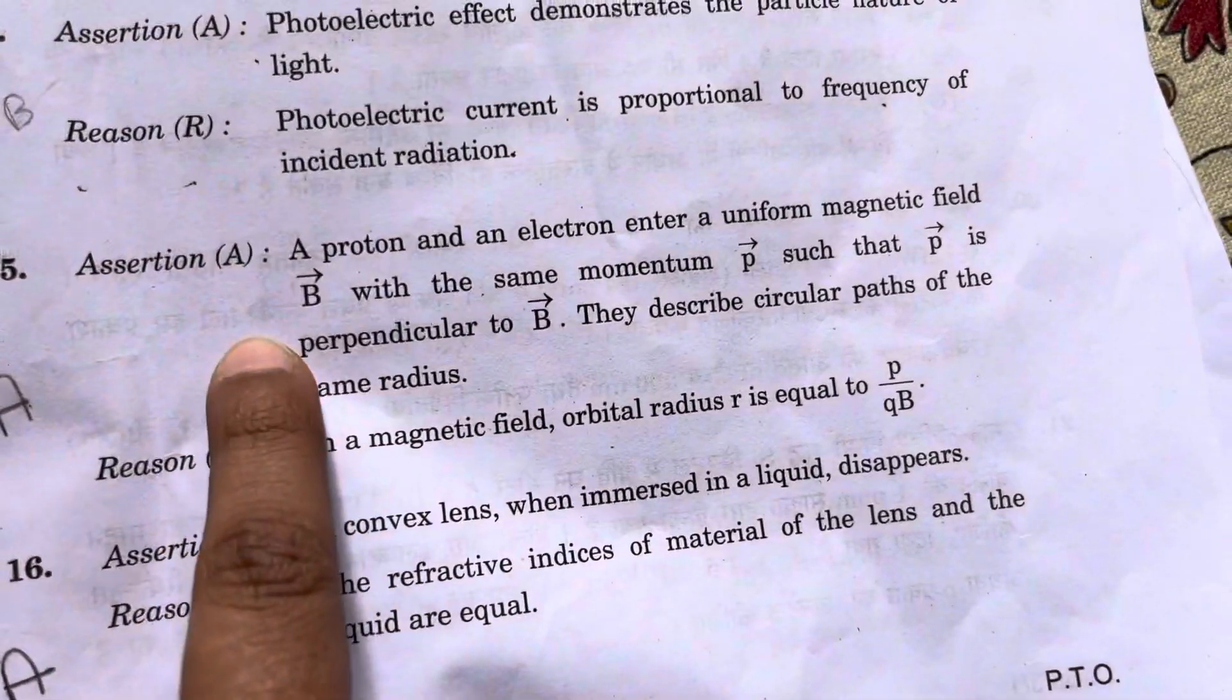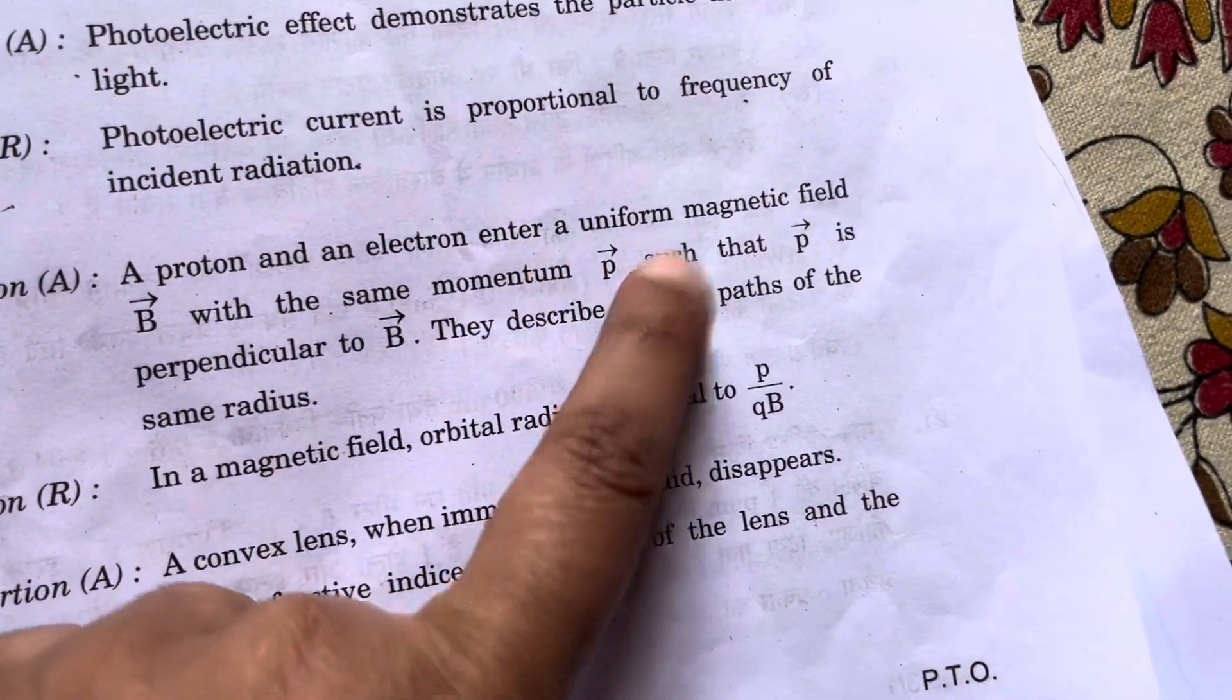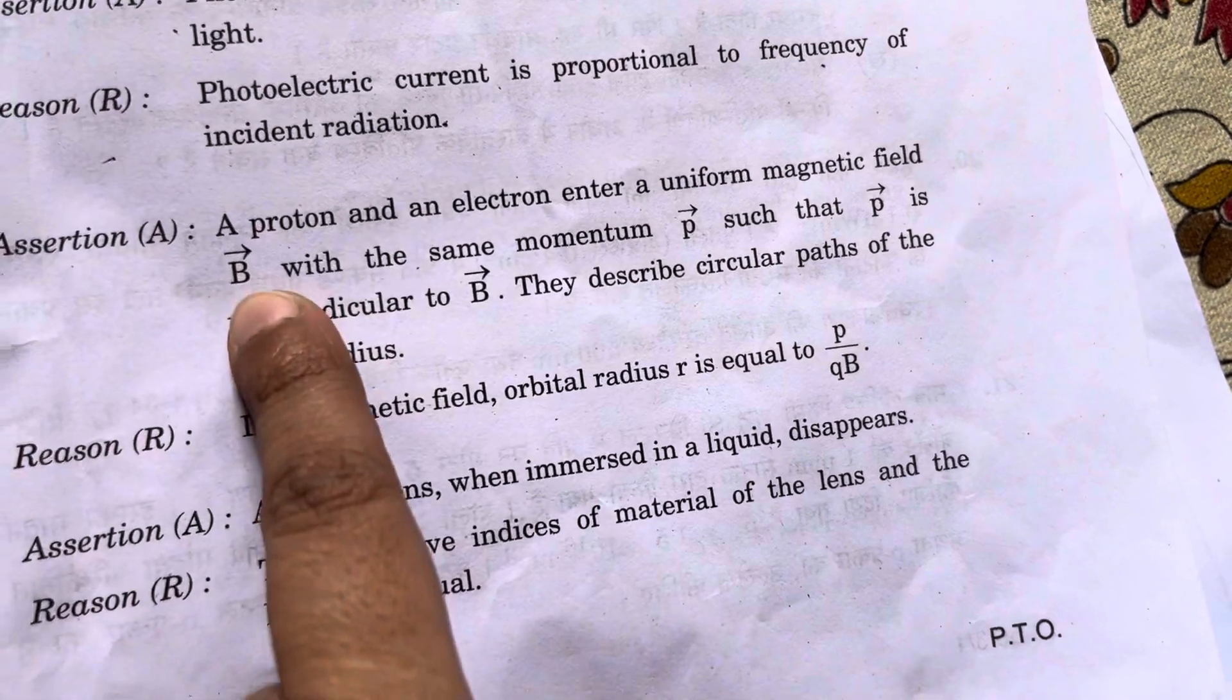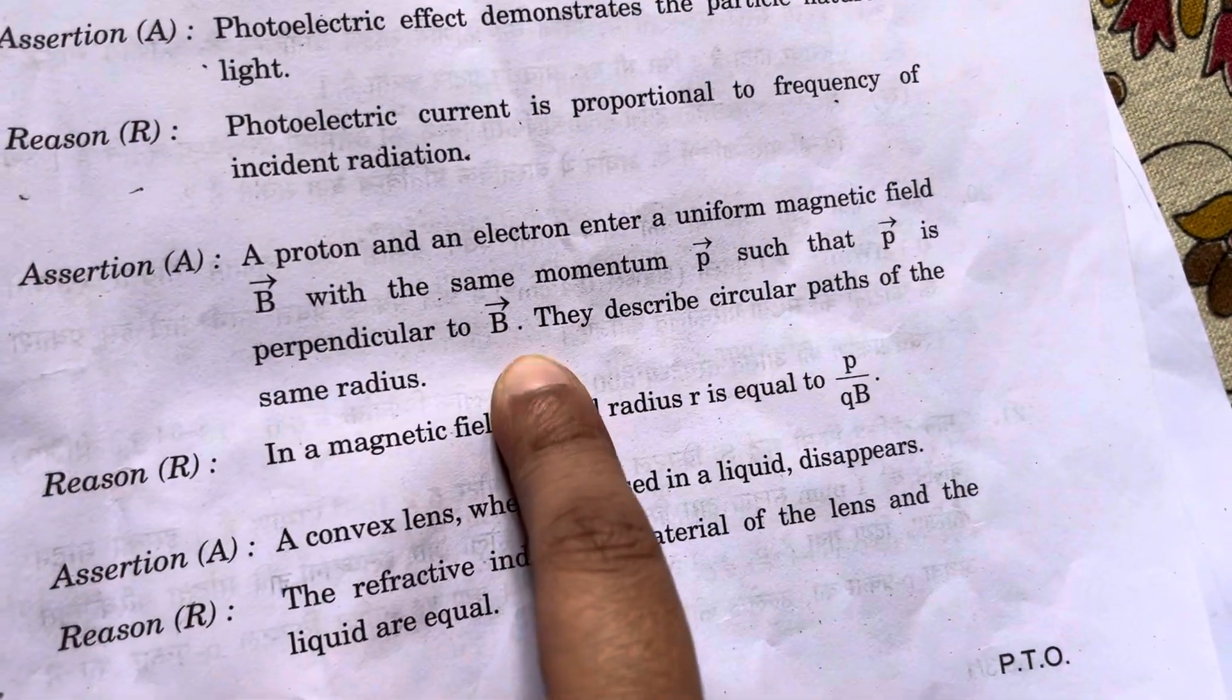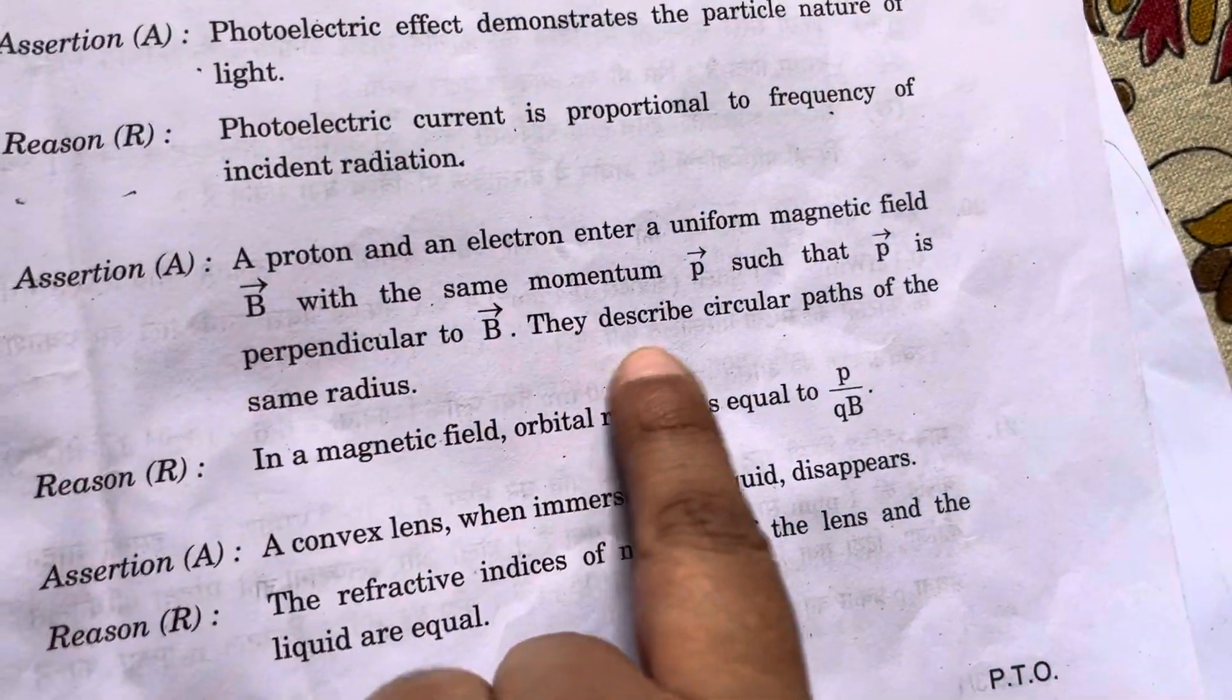Question number 15. Assertion: A proton and electron enter a uniform magnetic field B with the same momentum P such that P is perpendicular to B. They describe circular paths of the same radius.